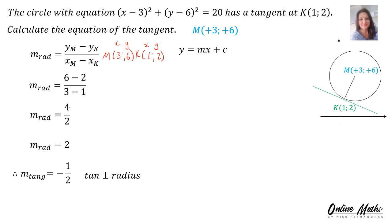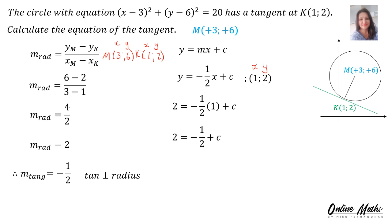Back into Y = MX + C. We substitute the gradient of the tangent, which is −1/2. To find C, we use point K(1, 2) — not M, since M does not live on the tangent. X is 1, Y is 2. In Y's place: 2 = −1/2 times 1 + C. −1/2 times 1 is −1/2. Moving −1/2 across: 2 + 1/2 = C, so C's value is 5/2. Therefore the equation of the tangent is Y = −(1/2)X + 5/2.